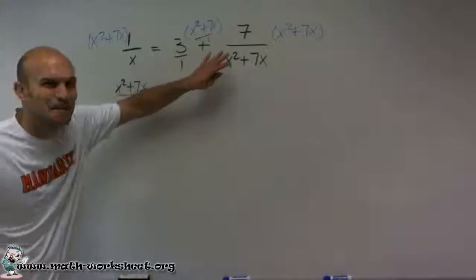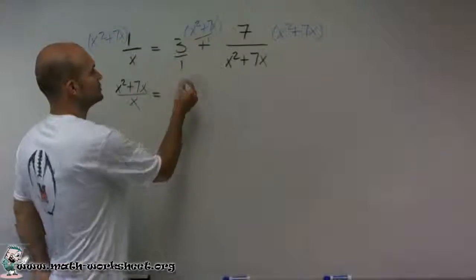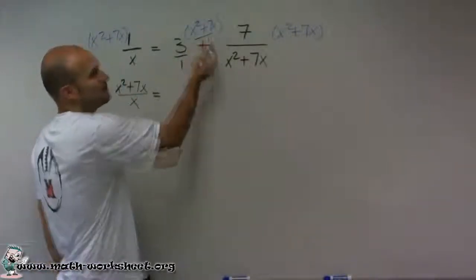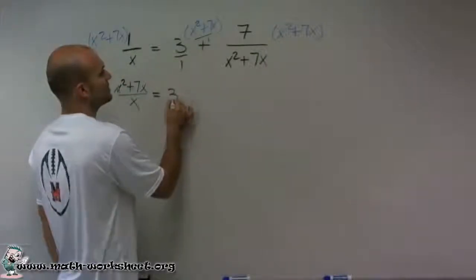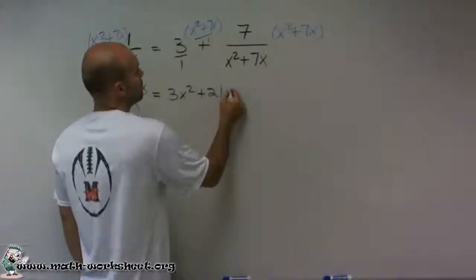So I know this is kind of tightly written in there. But you can see you're just going to multiply your numerators. And your denominator is just going to be 1 times 1, which is 1, which we don't really need to write. So 3 times x squared is 3x squared, and 3 times 7x is a positive 21x.